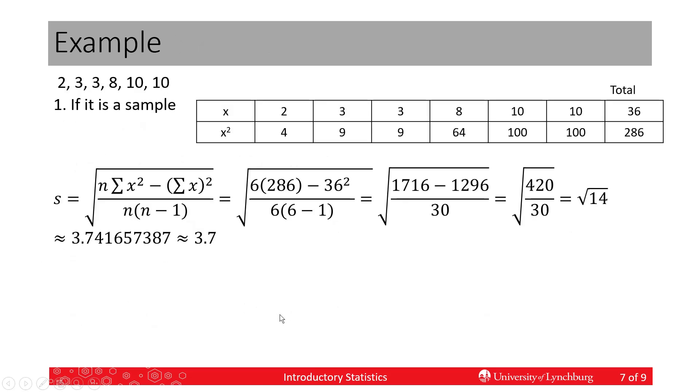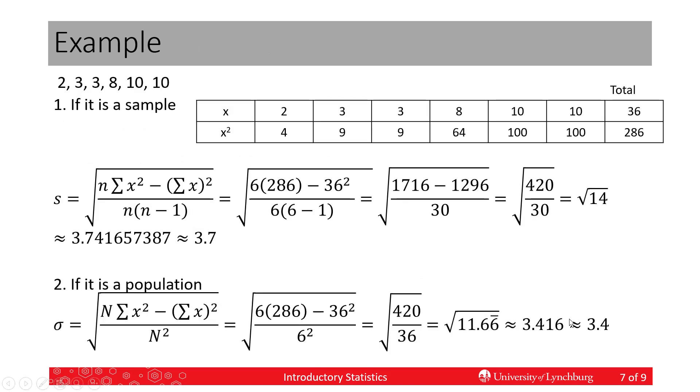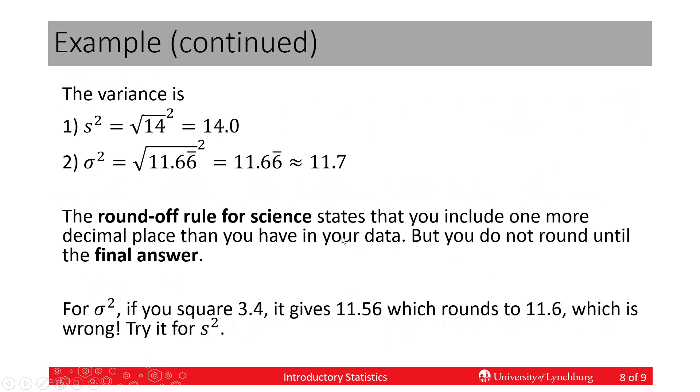If I ask you for the standard deviation of the sample, we gave 3.7 for the sample, 3.4 for the population. If you square 3.4, it gives you 11.56, that rounds to 11.6, which is wrong. It's supposed to be 11.7.